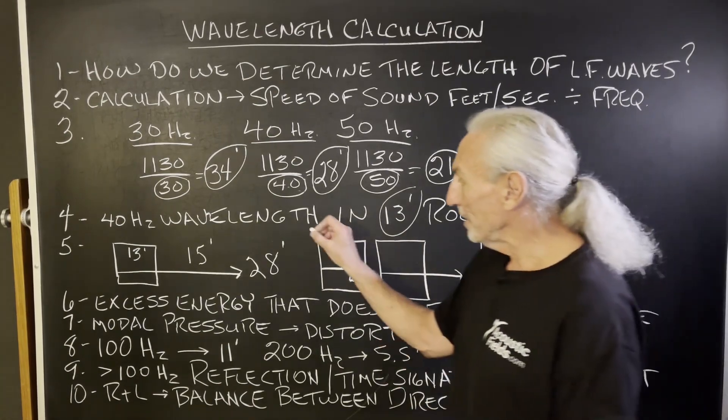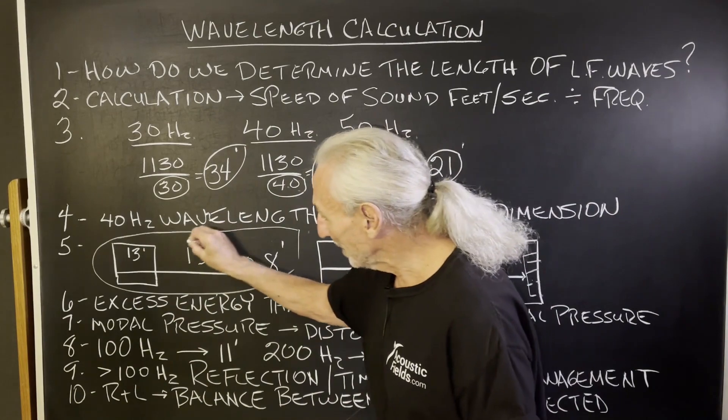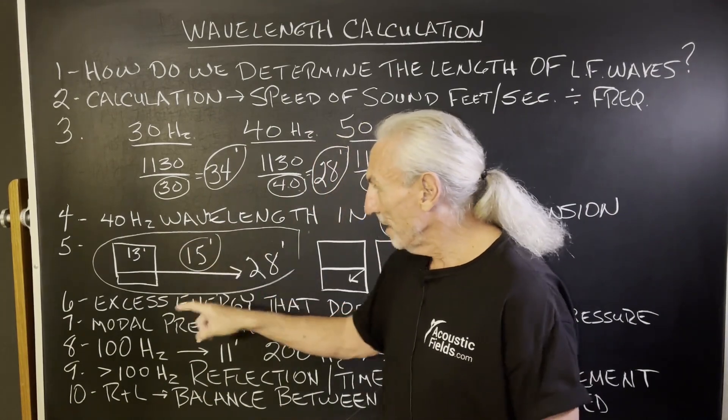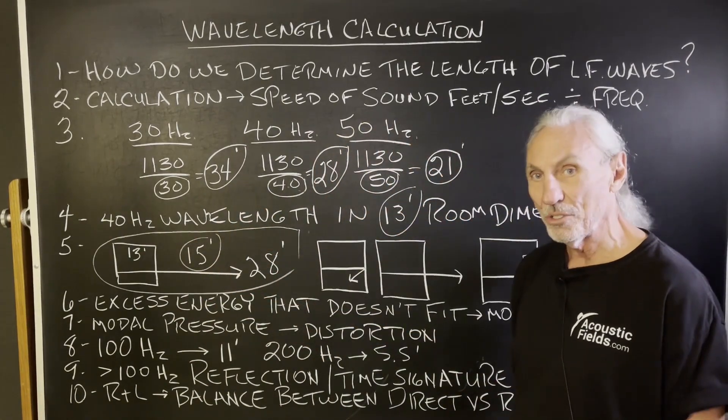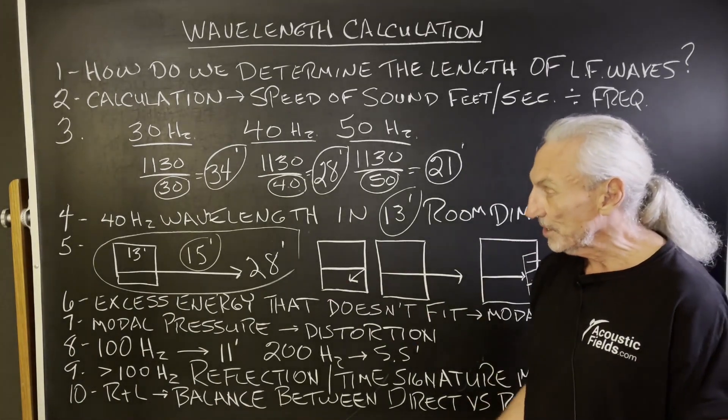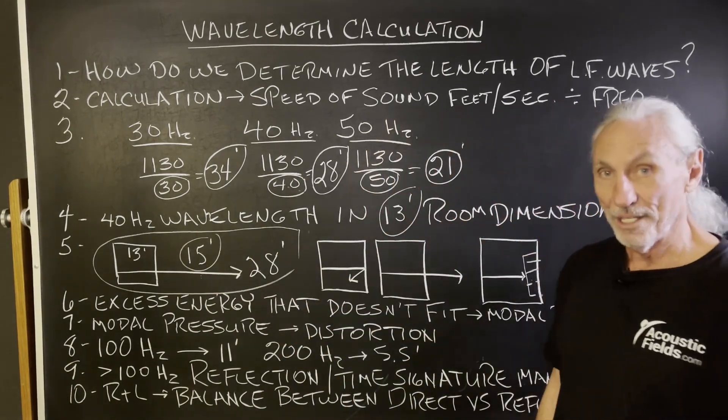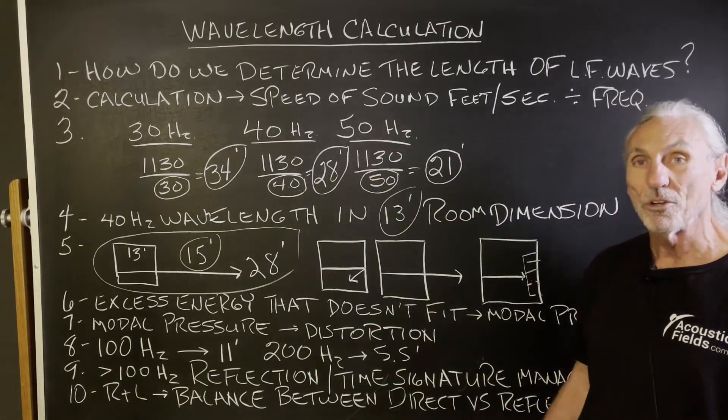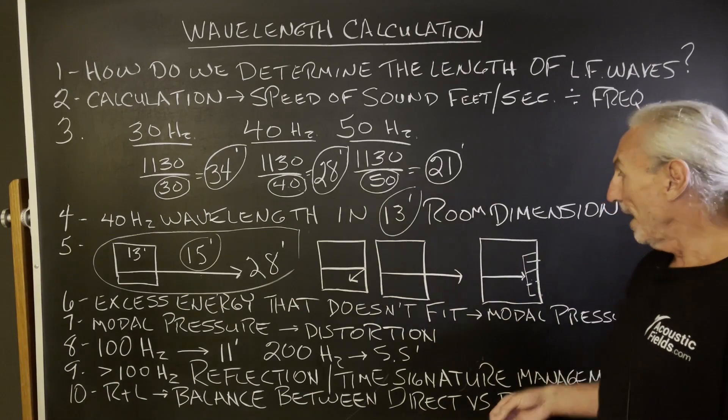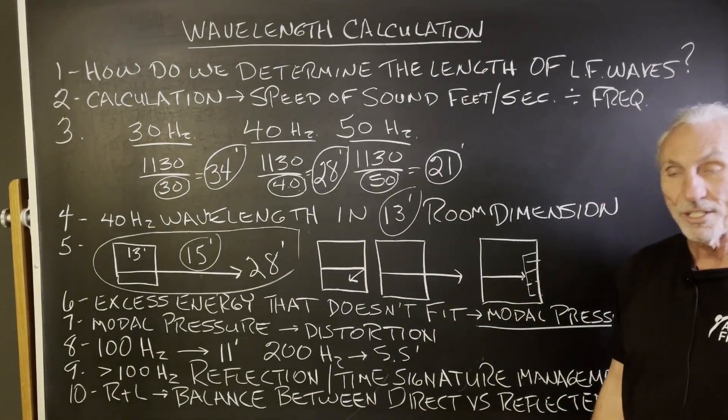So just go back to this example here. Just think of this energy that doesn't fit. If your room is not conducive to 28 foot in any area in terms of dimension, anything that doesn't fit within your room dimension is going to be unwanted. It's going to create unwanted pressure. And we call that room modes, unwanted modal pressure. Any energy that doesn't fit.